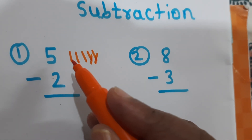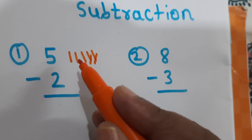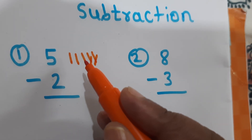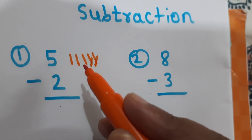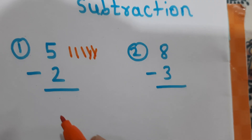So, what is the answer? 1, 2, 3. 3 lines are remaining. So, answer is 3.